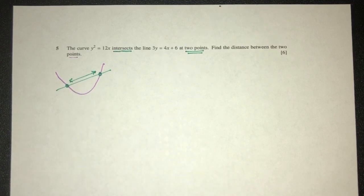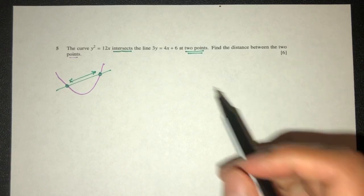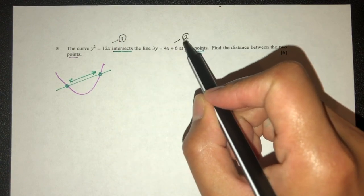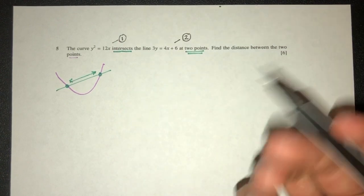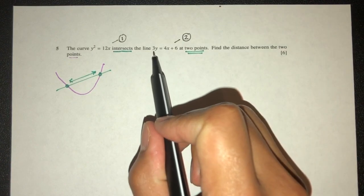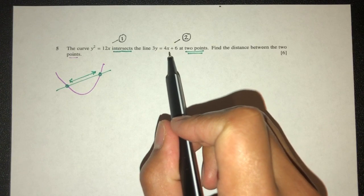Now to find the distance or to find the points we have to solve a simultaneous equation. So the first equation is this one. Second is this one. Now obviously we can choose which one we want to make subject. You can choose whatever you want. In this case it is up to you.